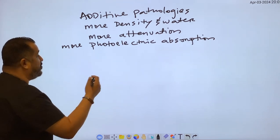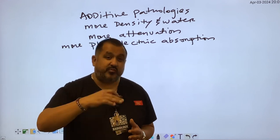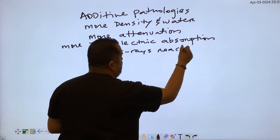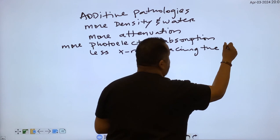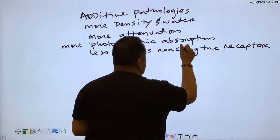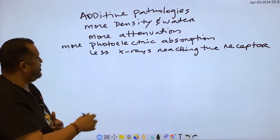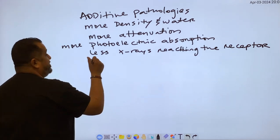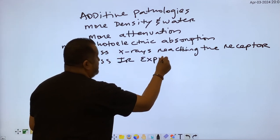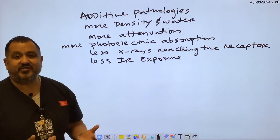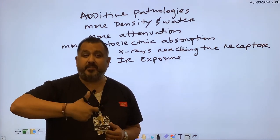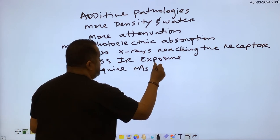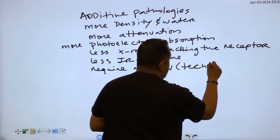So you're going to have more photoelectric absorption, more attenuation, and that's going to reduce the x-rays going through the object. You're going to have less x-rays reaching the receptor. So that means you're going to have less IR exposure. To compensate for this, if you're having less x-rays reach the receptor, you're going to have to go up in your technique. It's going to require more mAs or more KV.